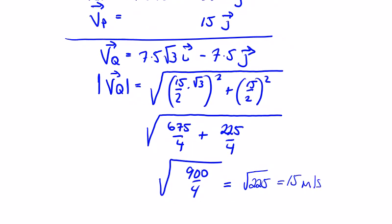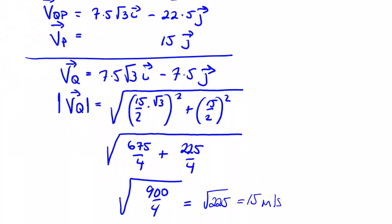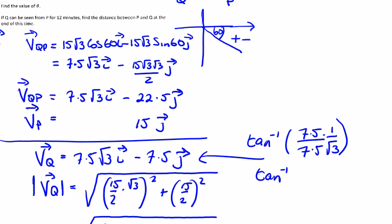And that will be, I think we're dealing in meters per second here. There was kilometers per hour. And then the direction, the inverse tan of 7.5 the j over 7.5√3, and this works out evenly.